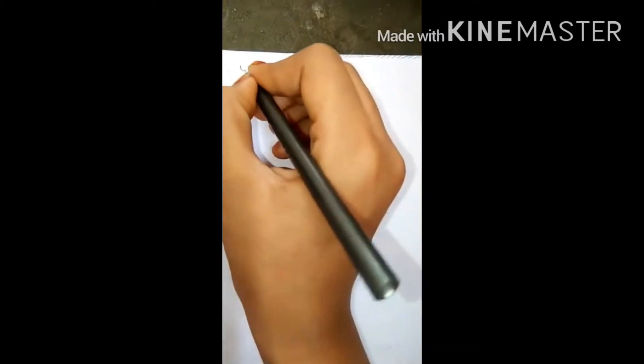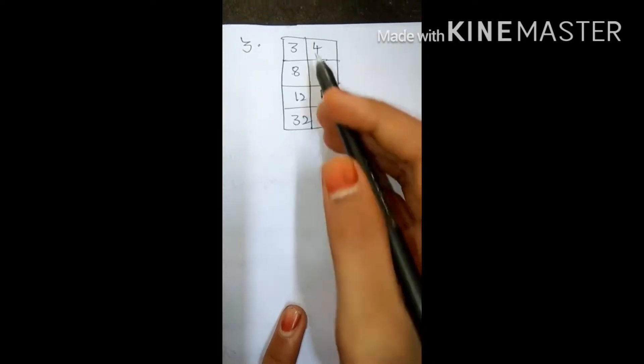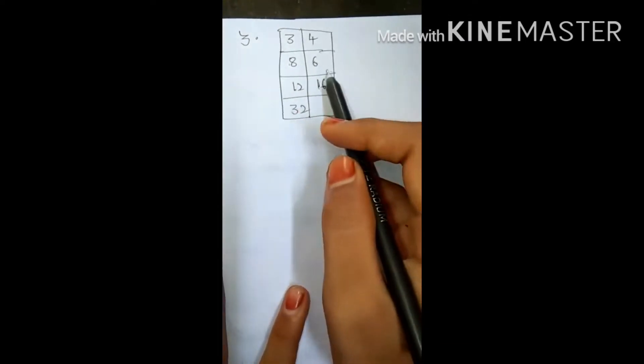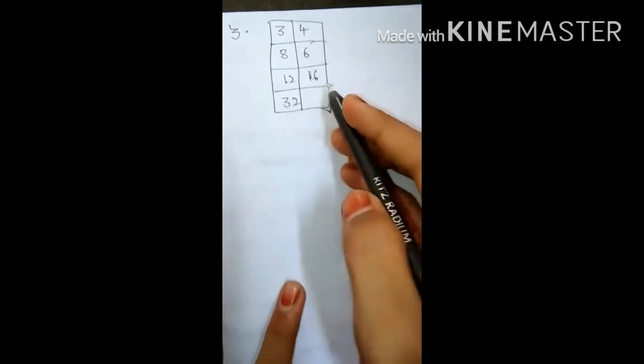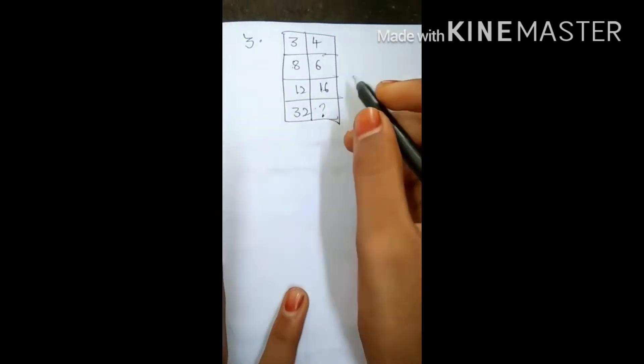And our third puzzle is, see here, 3, 4, 8, 6, 12, 16, 32. Here we should find this, okay, question mark.